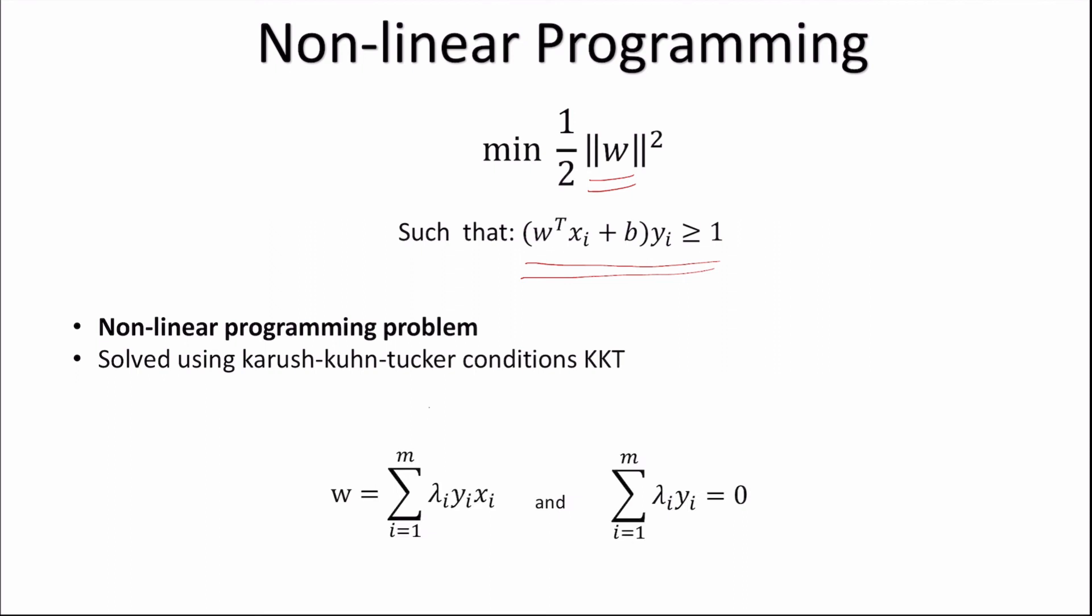So here, m is given as our number of training examples, and lambda i as our Lagrangian multiplier, yi as our labels, and xi as our data points.